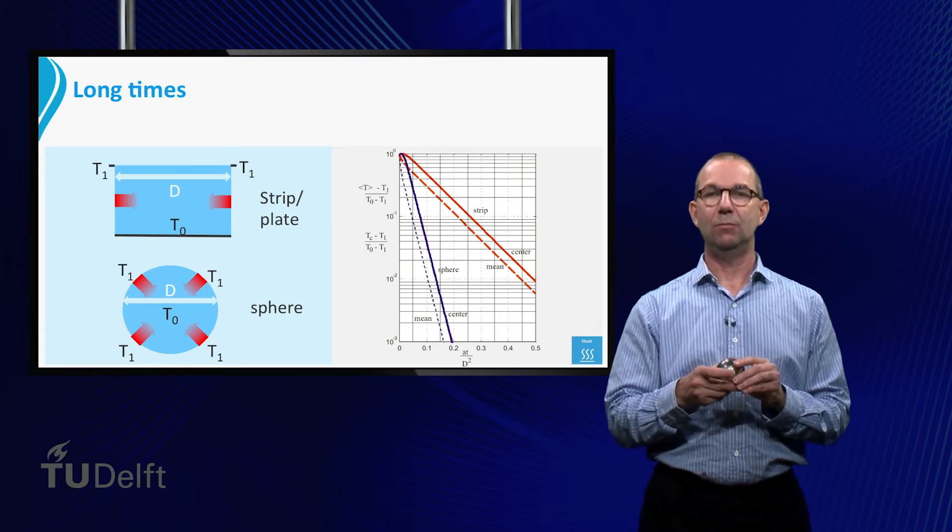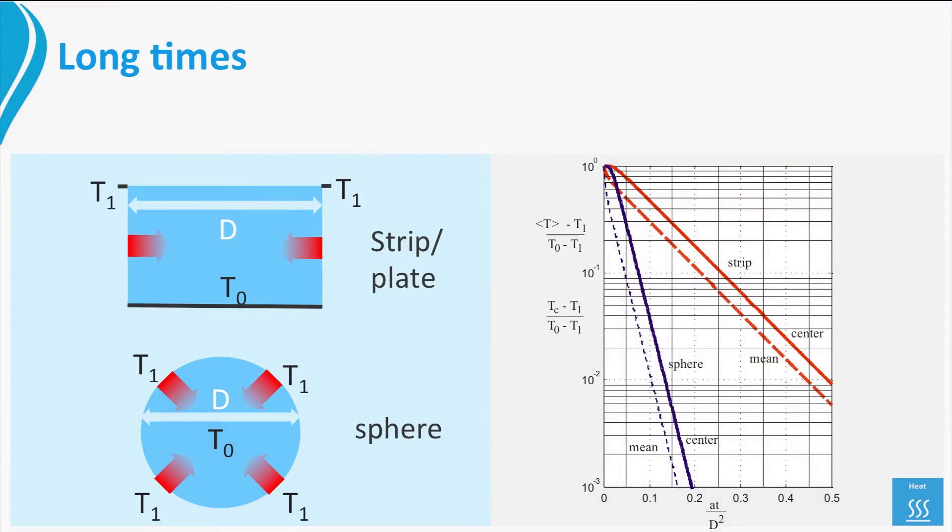Again here, the mean temperature drops faster than the center temperature, which is also logical. The center is furthest away from the warm surroundings and thus has to wait longest before the heat flow has reached it.